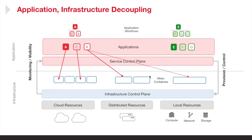This could mean moving an application workflow component to another resource that is more appropriate for the current quality of service requirements, or copying state, or doing whatever needs to be done from an application perspective. The important part is everything is being driven top-down from the application. There's no infrastructure orchestration — no VMs are being orchestrated or copied or moved around in order to establish or ensure application quality of service.